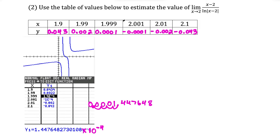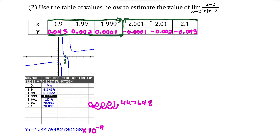What jumps out right away is that in the neighborhood of x equals 2, the y values are equal and opposite on either side of x equals 2. That has to do with the graph having point symmetry over the point (2, 0) between x equals 1 and x equals 3. But we're taking the limit as x approaches 2. Approaching from the left — going from 1.9 to 1.99 to 1.999 — the y values are shrinking to 0. Approaching from the right, moving from right to left, the y values are also getting closer to 0. So our limit estimated from the table is equal to 0.